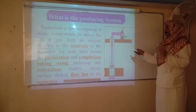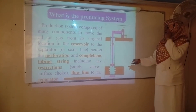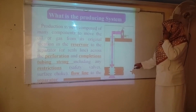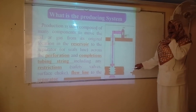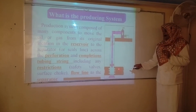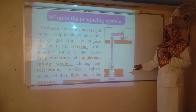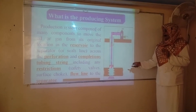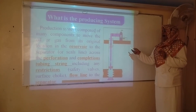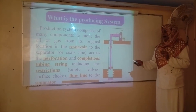So, the producing system is a system that can be used to move liquid from its original location in the reservoir through perforations, tubing, flow line, and any restrictions in the wells.